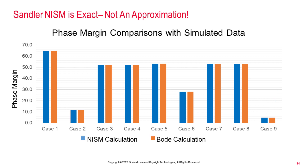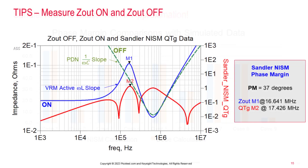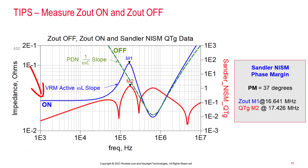A similar comparison between measured Bode plots and NISM measurements yielded consistent results well within one degree. The most important tip for using the Sandler NISM stability assessment is to find the correct impedance peak and QTG peak. This is done by comparing the control loop powered-on and powered-off impedances.